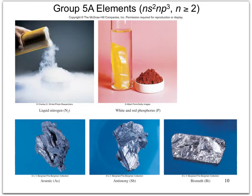Here we show nitrogen as a liquid, though it is usually a gas at room temperature. There are two allotropes of phosphorus, white and red, and then arsenic, antimony, and bismuth look very much like metals.